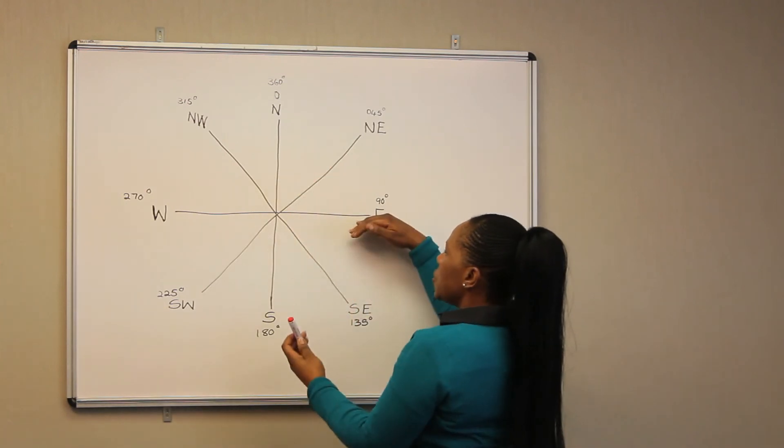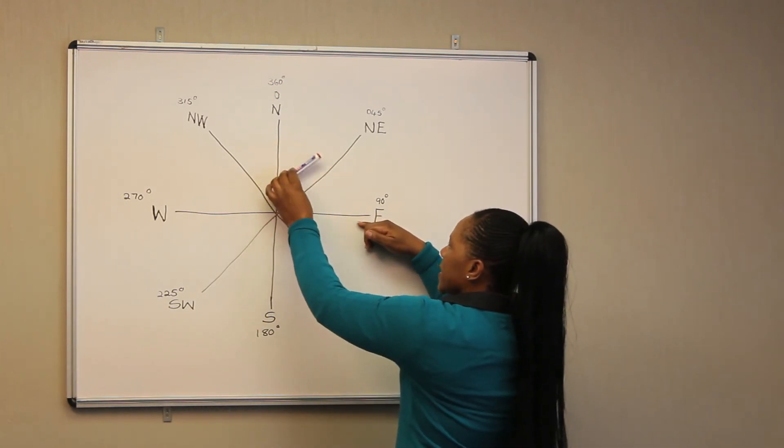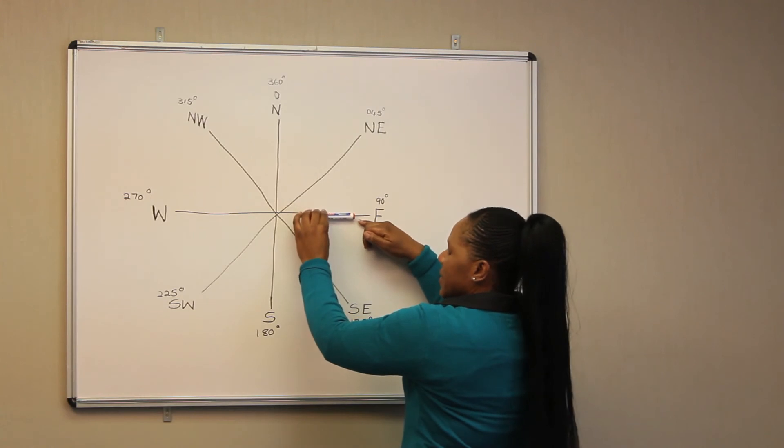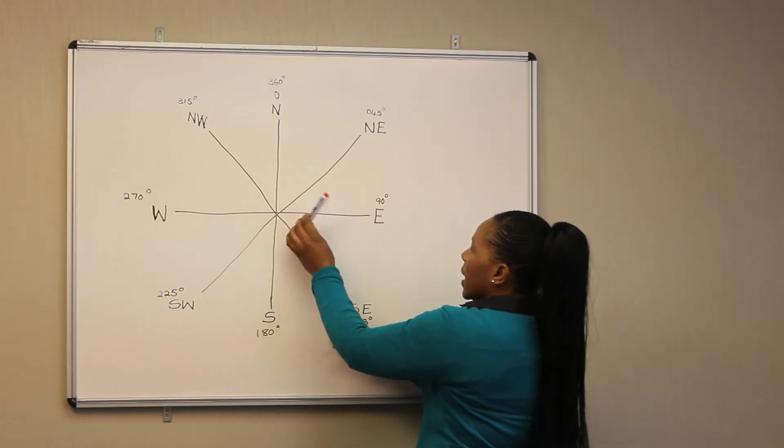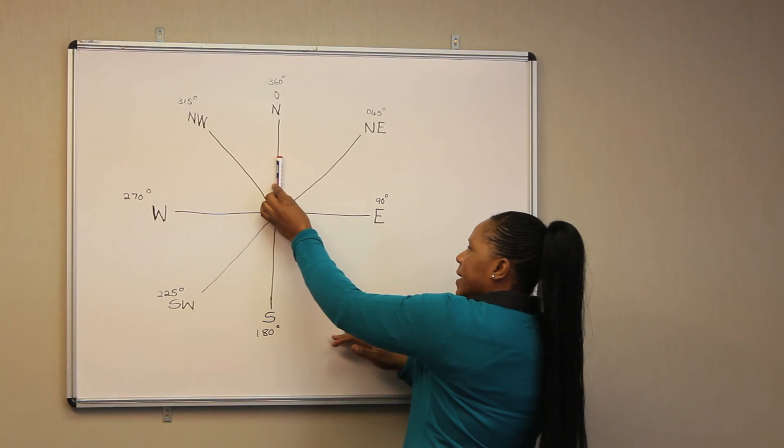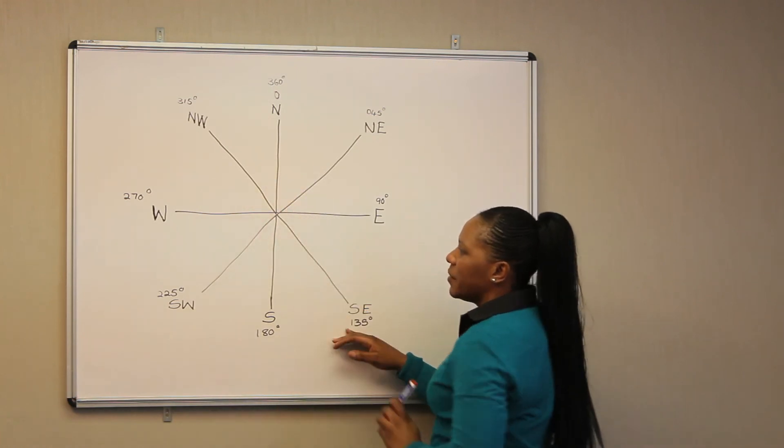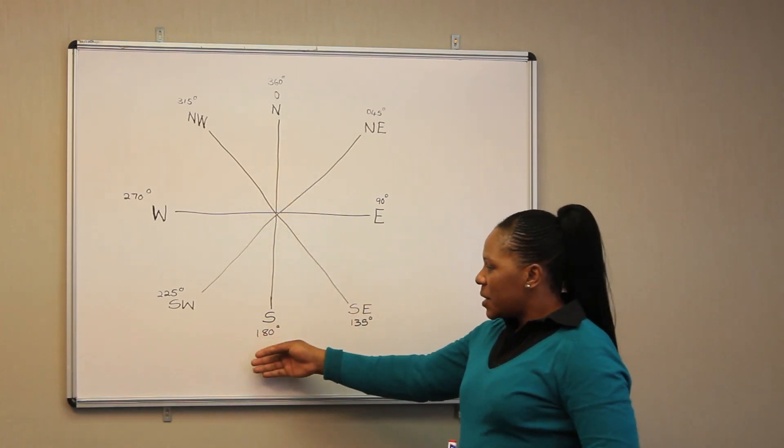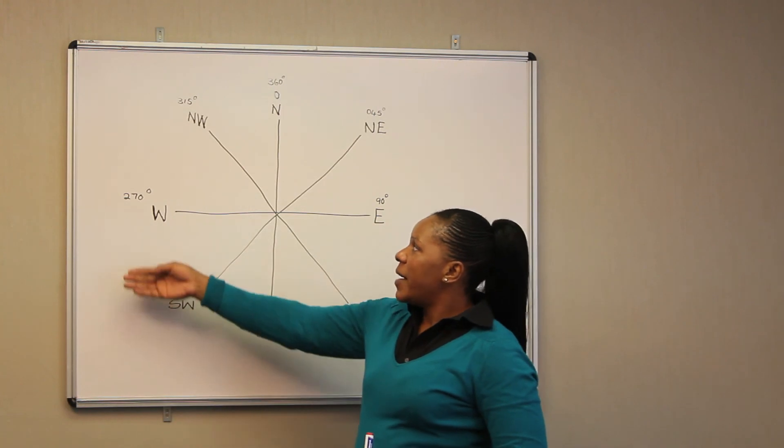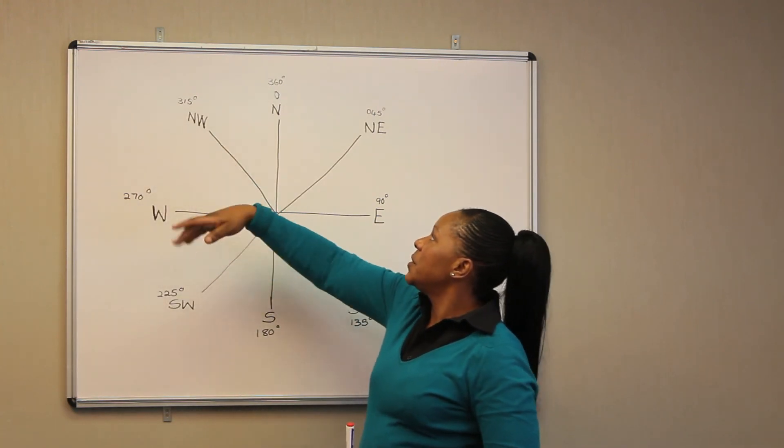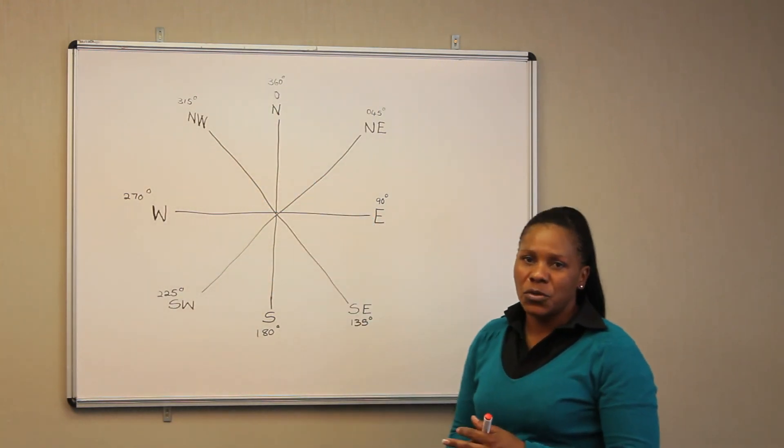If we are talking of East, measuring it from the North, it's going to be 90 degrees. Southeast, measuring it from the North, is 135 degrees. South is 180, Southwest 225, West 270, Northwest 315, and 360 back to North.